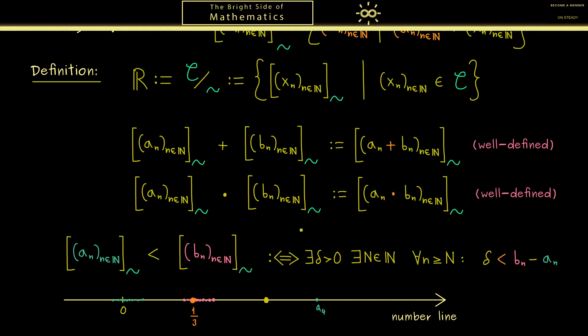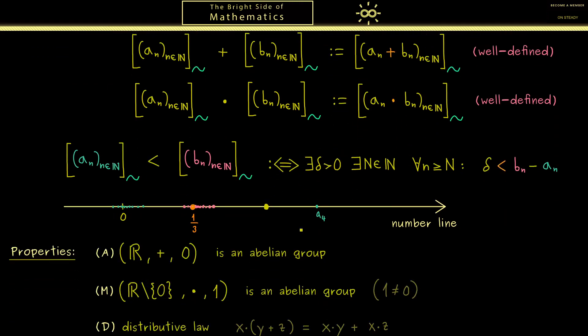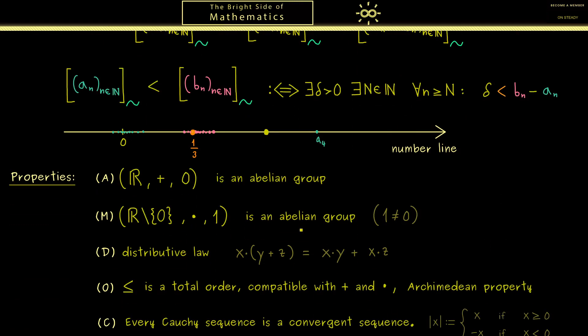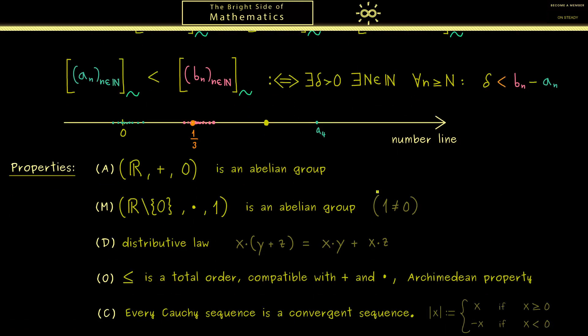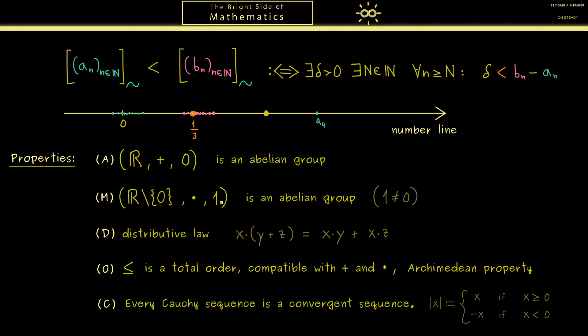Now in the last step, one can just calculate that all the properties we want, the axioms, are actually satisfied. For example, we can define the 0 element and the 1 element and show that we have a field again. However, the important part we have now by construction is the completeness axiom. Every Cauchy sequence is now actually convergent.